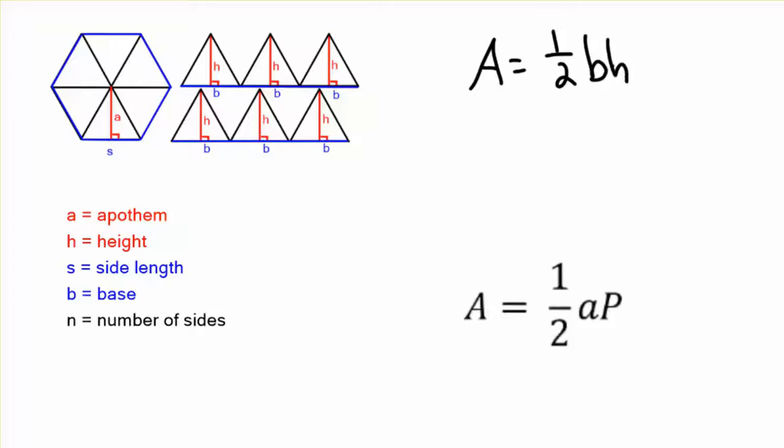It's one-half base times height, the area of one triangle, one-half base times height. And then multiply that times n. How many triangles are there? Very simple. Feel free to use that formula. You don't have to use one-half ap. I'm just going to show you how they're the same.